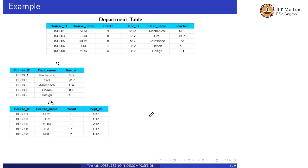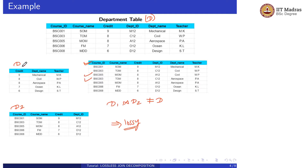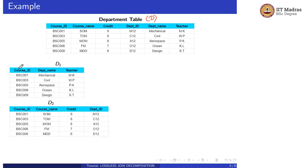Now consider the same department table D decomposed into D1 and D2, but here the common attribute between D1 and D2 is Course ID instead of credit. If we perform the natural join operation between D1 and D2, we get the same result D. So D1 natural join D2 equals D, and we can say that our decomposition is lossless decomposition.